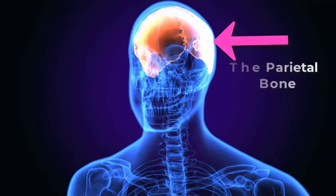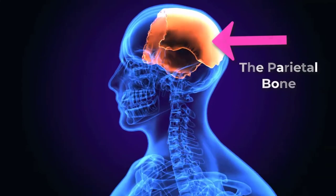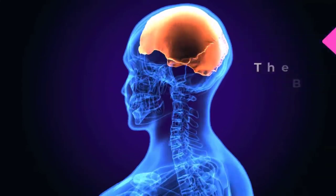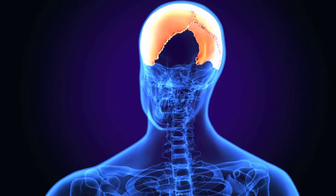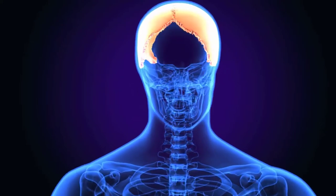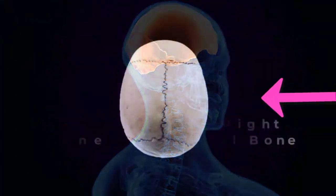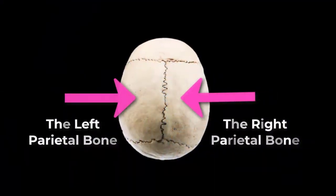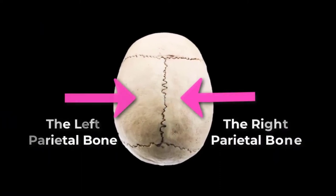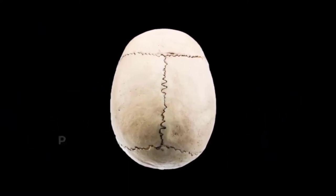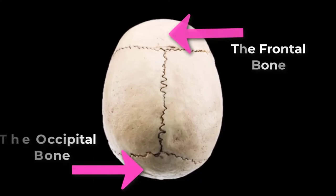The parietal bone forms most of the upper lateral side of the skull. These are paired bones, with the right and left parietal bones joining together at the top of the skull. Each parietal bone is also bounded anteriorly by the frontal bone,